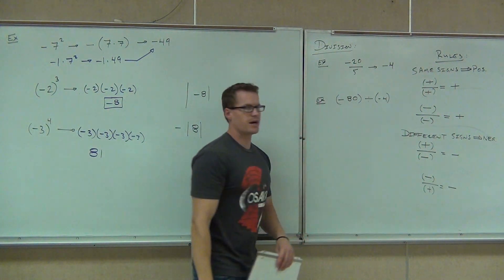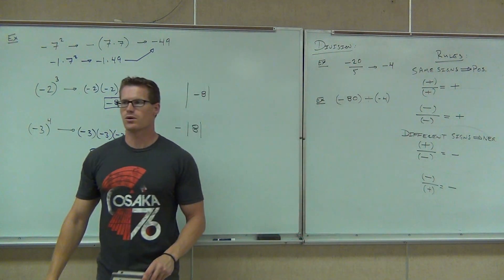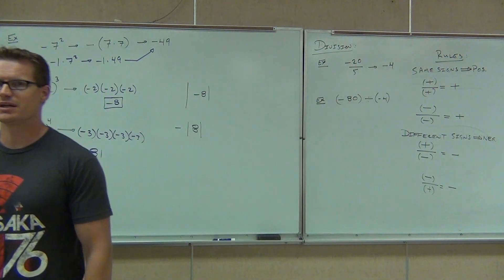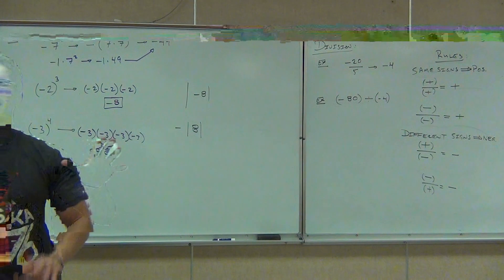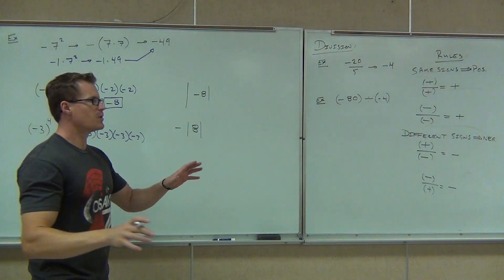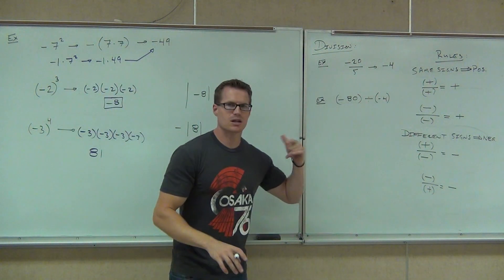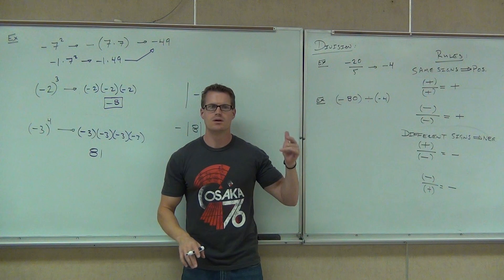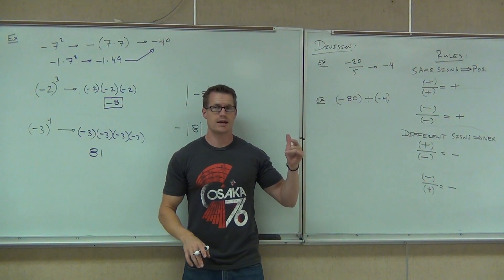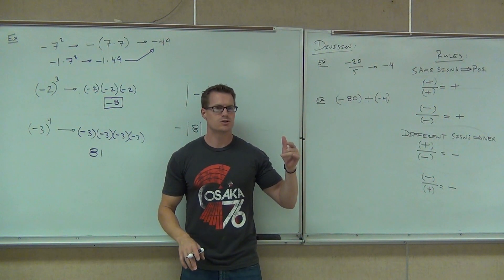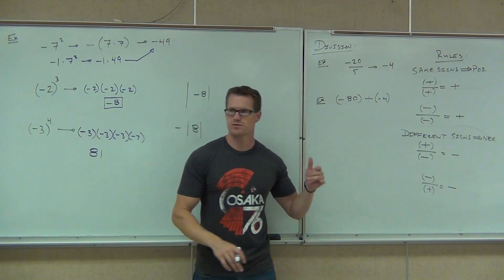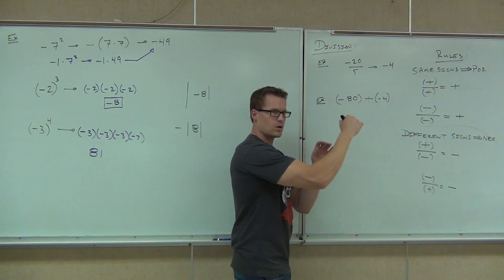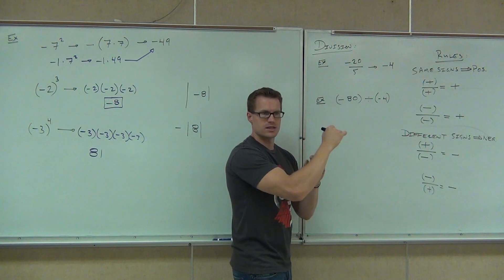Negative 80 divided by negative 4. Think about the math — are we going to get a positive or a negative here? Positive. And how much? 20. Good — positive 20. Do the long division if you have to, that's fine.